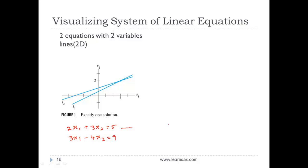If I independently draw each one, it will be a line. If these two equations or these two lines intersect at a point as shown here, then we will get a single solution of x1 and x2.